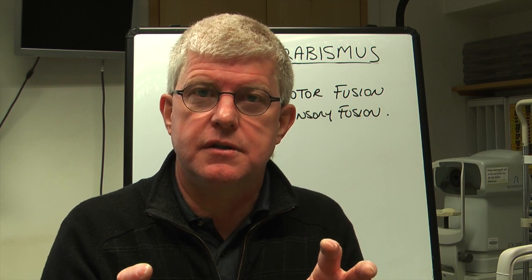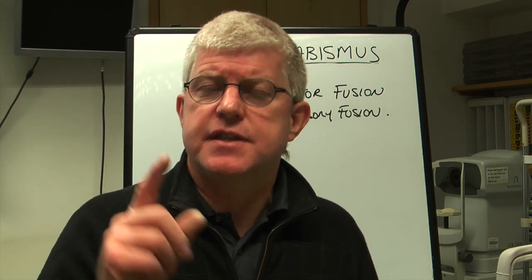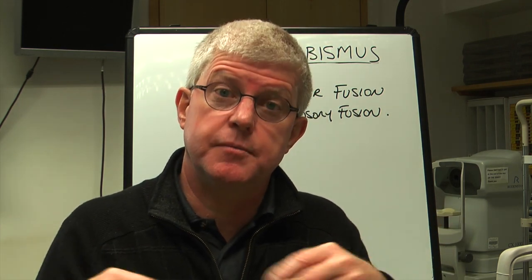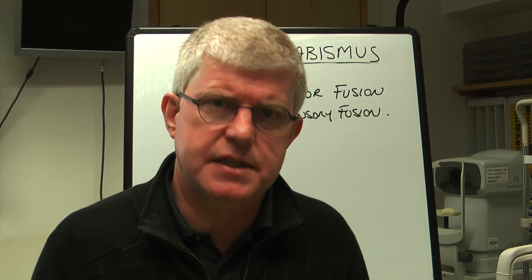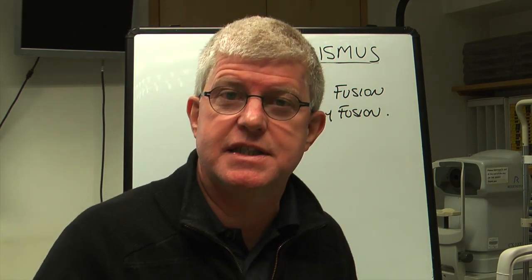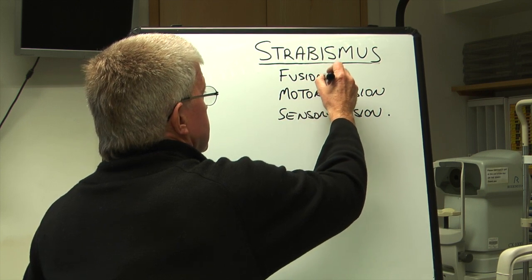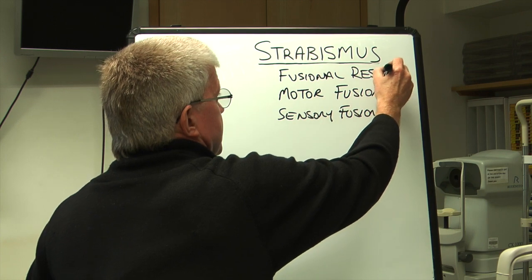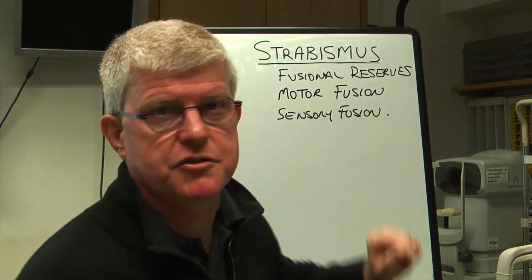What has to happen in that situation is that the brain needs to be able to control that eye movement to bring them together to work as a team. If the retinal images are slightly off between the two eyes, the brain is able to cope with these differences and overcome them. The ability of the brain to deal with these little anomalies is called fusional reserves, and usually the brain has enough fusional reserves to provide good motor and sensory fusion.